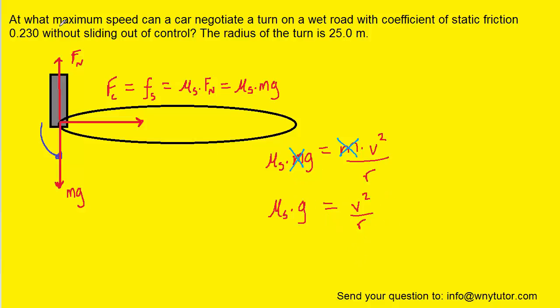Now going back to the question we're trying to figure out the maximum speed so we're trying to solve this equation for the speed v. In order to do that we can multiply both sides of this equation by the radius r so that it cancels out on the right hand side and then we'll take the square root of both sides of the equation so that we can isolate the speed v.